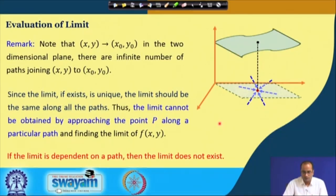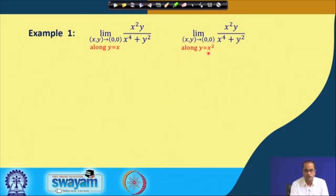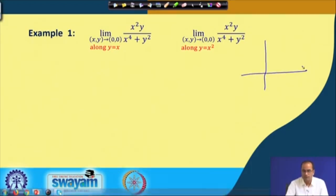To summarize: evaluating the limit along a particular path is not conclusive, but if we find two different paths along which the limits differ, then we can say the limit does not exist. Now we will see some possibilities for finding the limit of a function of two variables as (x,y) approaches some particular point. Consider the example: limit of x²y / (x⁴ + y²) as (x,y) → (0,0), first along the path y = x, and second along the path y = x².